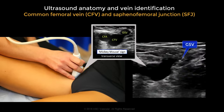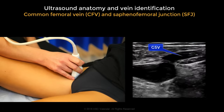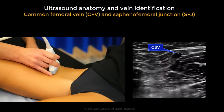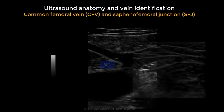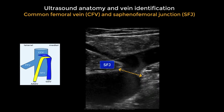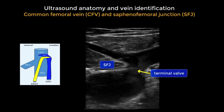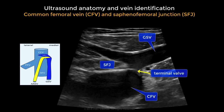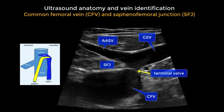This is the so-called Mickey Mouse sign and represents the saphenofemoral junction. From the common femoral vein you can see the great saphenous vein, which leaves the common femoral vein and continues in the medial aspect of the thigh. Looking carefully at the saphenofemoral junction, we can see the terminal valve, which is typically located at this level, and then the origin of the great saphenous vein and the anterior accessory saphenous vein.